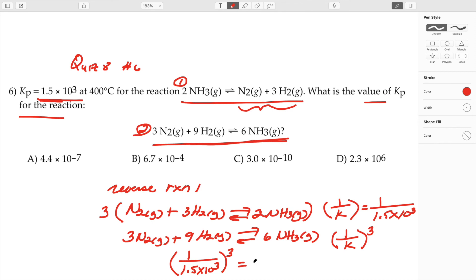Let's see, 1 divided by 1.5 and we'll go ahead and cube that and I end up with 3.0 times 10 to the negative 10.